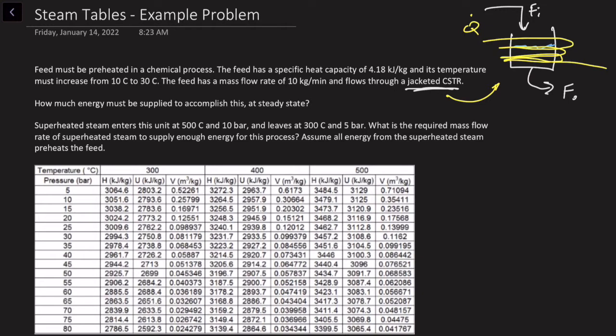One thing to note is that we're going to assume that all the energy from the superheated steam is going into this chemical reactor. In real life, we know we're going to have some losses — depending on how much insulation we have, probably not going to be this. So we're giving it kind of an overestimate. That's one thing to make note of while you're solving this.